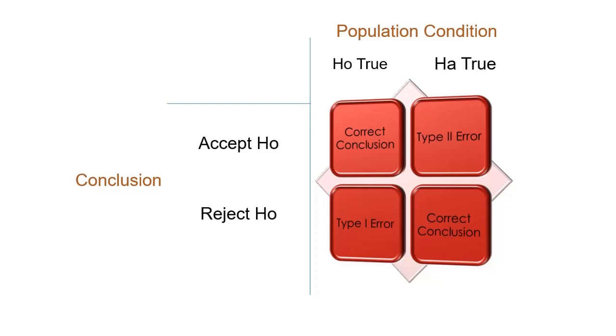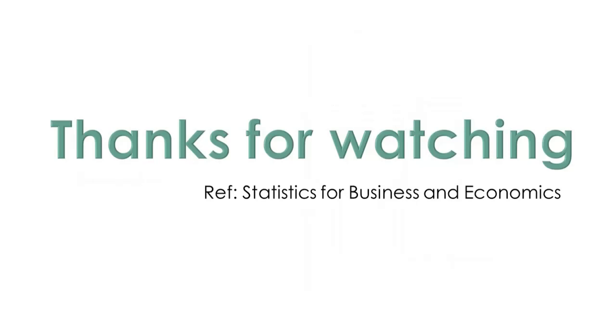If the conclusion is to accept H0 and H0 is true, this conclusion is correct. If HA is true, we make a Type 2 error. If we reject H0 when it's true, we make a Type 1 error.